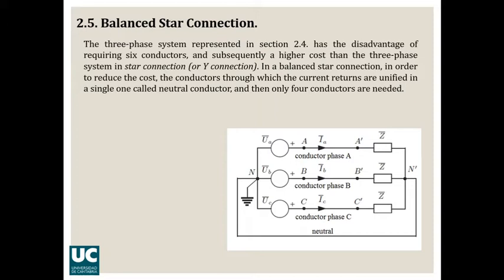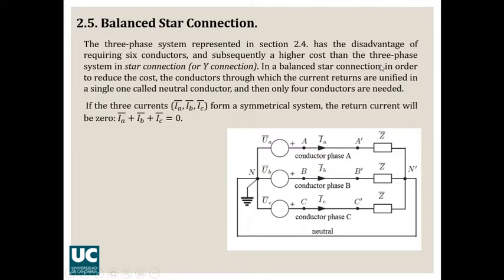In this case, instead of requiring three independent neutral conductors, we have only one conductor. So here, at point N prime, the three currents Ia, Ib, and Ic are summed at this point, and the sum of the three currents returns through the neutral conductor. This is very convenient because, as we have already explained, the sum of the three currents must be zero.